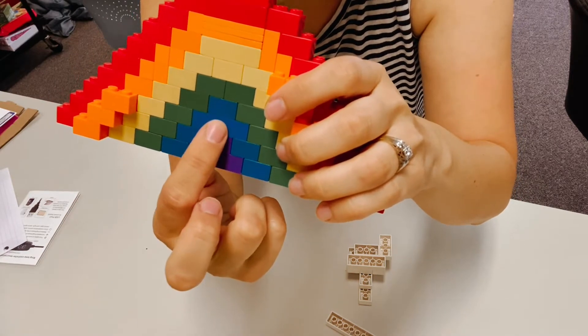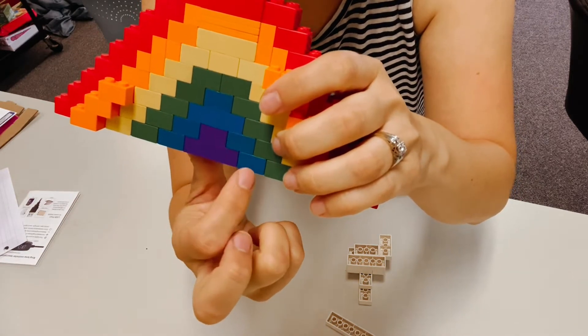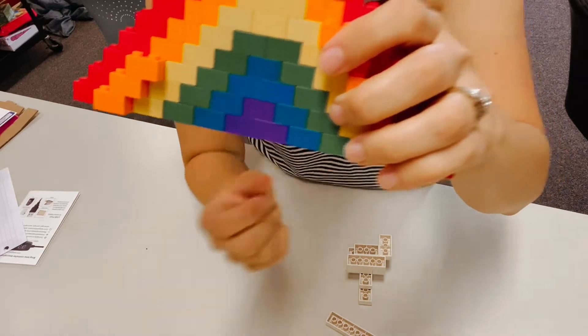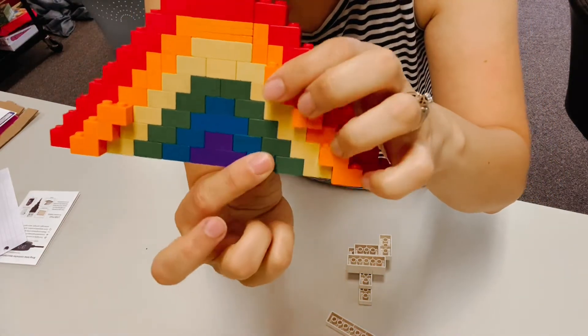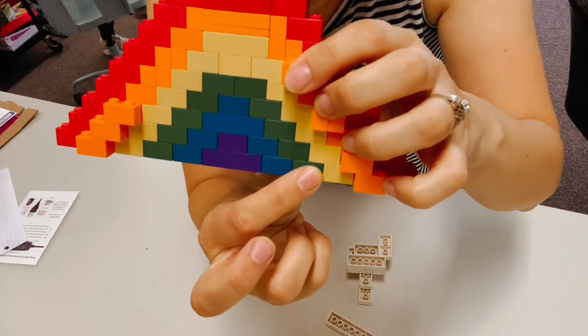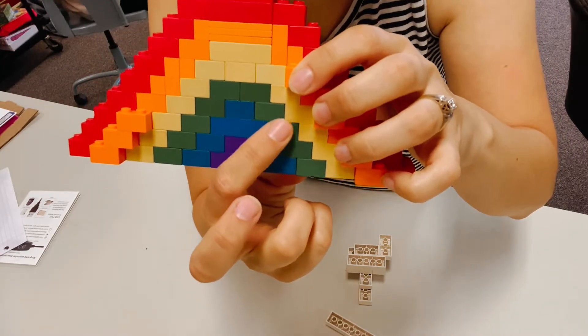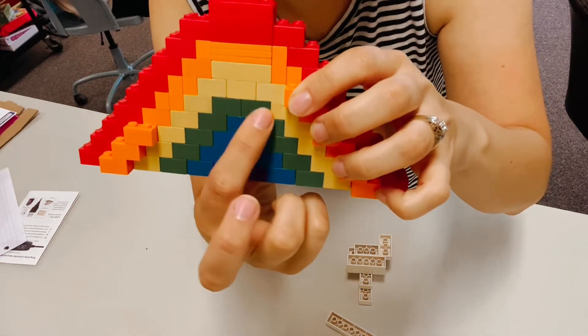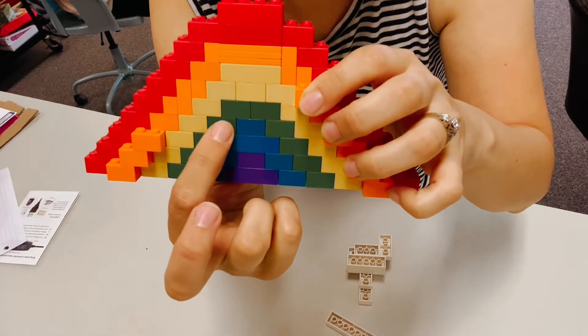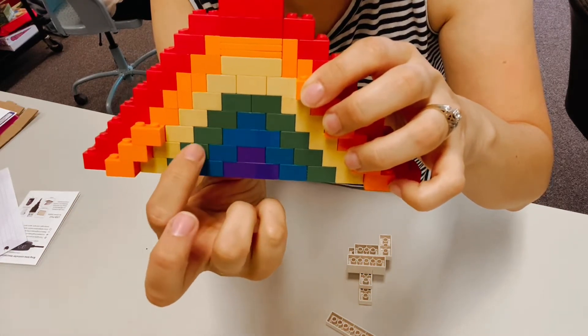The green will go on top of that, and you'll need one, two, three, four, five, six, seven, eight, nine, ten of those. Or if you want to join that one together, you might need about nine of those.